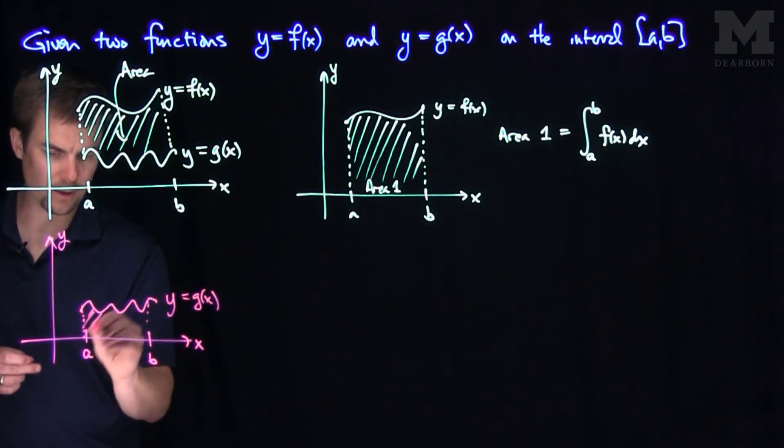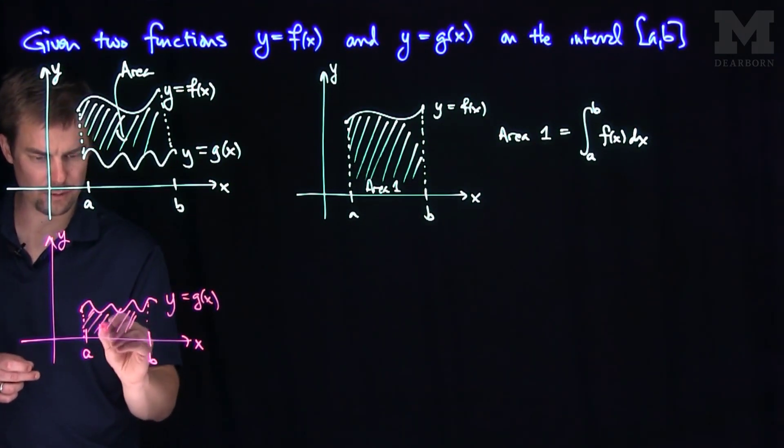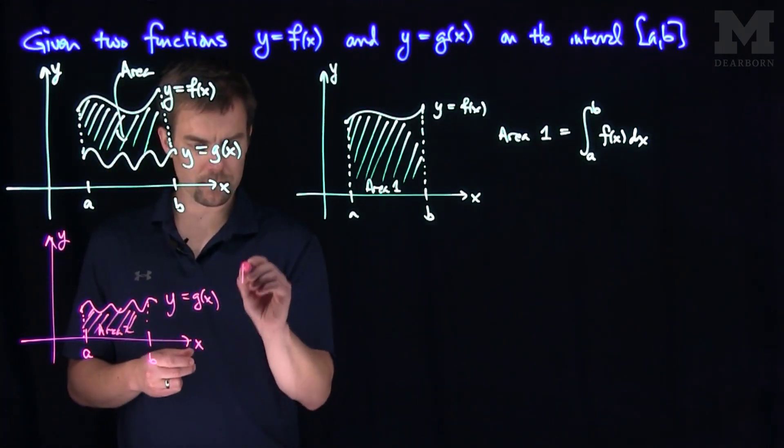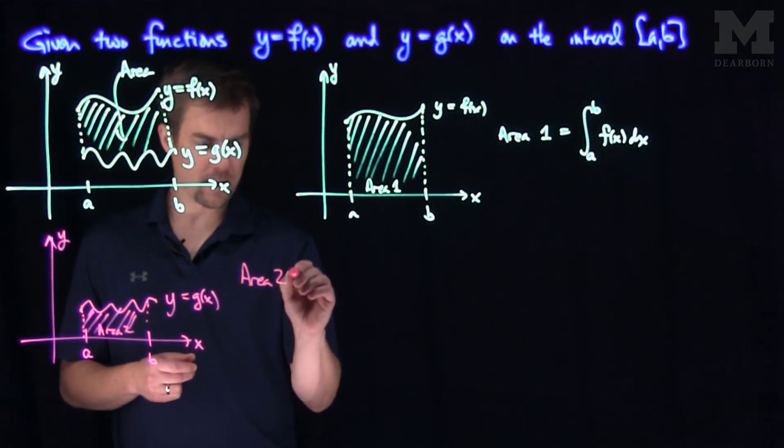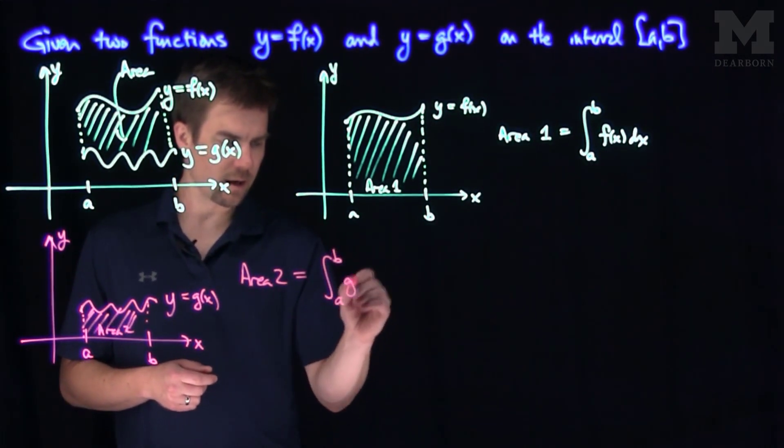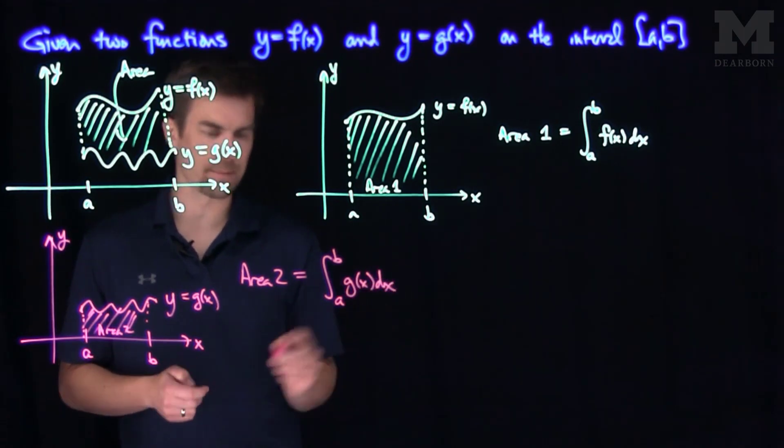I know how to find this area over here. I'm going to call that area number two. So area two is the integral from a to b of g of x dx, again by calc one.